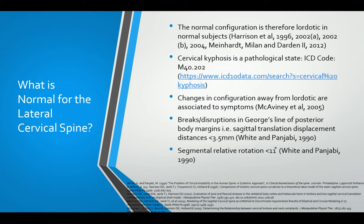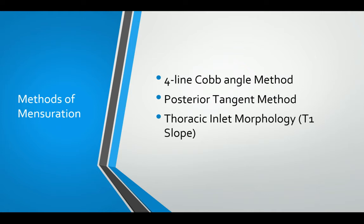The main areas of discussion for today are the four-line Cobb angle method and the posterior tangent method — we're going to be discussing and comparing these two methods — and the thoracic inlet morphology with the T1 slope, which is also part of your extra reading. By the end of the session it will become obvious why we're doing it the way that we're doing it today.